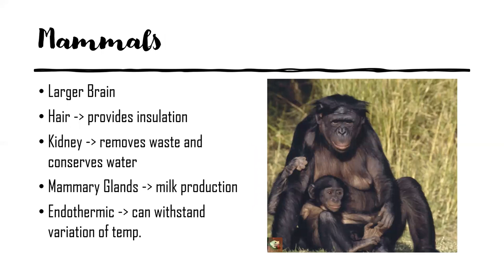Finally, we come to mammals. Unique traits include larger brains, hair for insulation, a layer of fat also providing insulation, kidneys that remove waste and conserve water — again showing reduced water dependency — and mammary glands for milk production and meeting nutritional needs. Mammals are endothermic, with an active metabolism that generates heat, allowing them to withstand a wide variation in temperature and live in diverse environments such as very cold tundra or very hot deserts — a limitation not shared by the other clades.